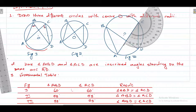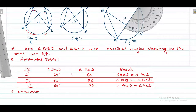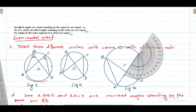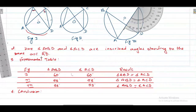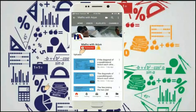This is our experimental table. Now the last step is step number four, which is the conclusion. In the conclusion we state: inscribed angles of a circle standing on the same arc are equal, which is proved. This is your solution. Thank you. Please click subscribe and the bell button, and don't forget to like, comment, and share.